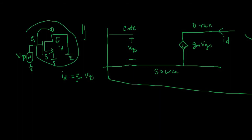There are other terms which come in parallel to gm·vgs — note that this is called a voltage-controlled current source. It is voltage-controlled, depending upon VGS: the id changes by the factor gm, which is the transconductance of the MOSFET. So that is how you arrive at the small signal model. There are other components which come from drain to source — I will try to add those in a later video.